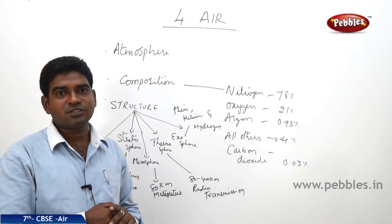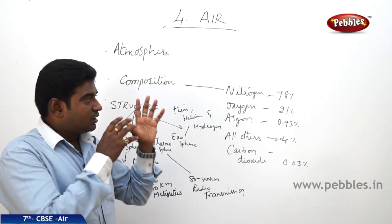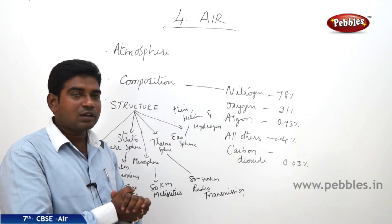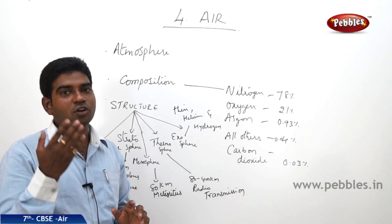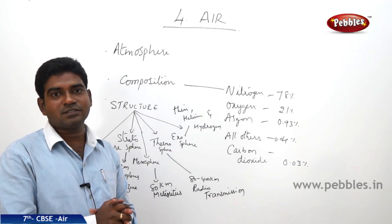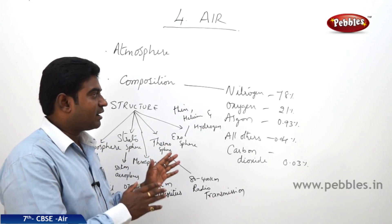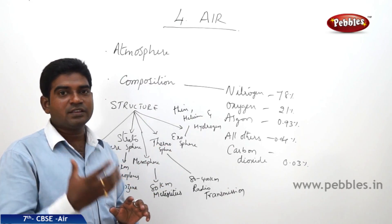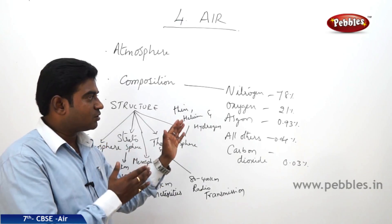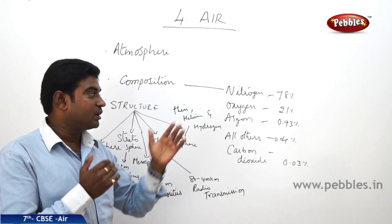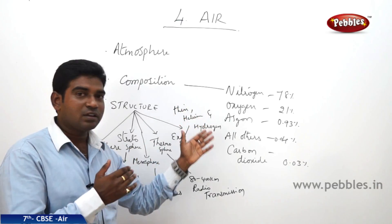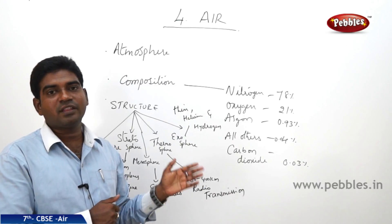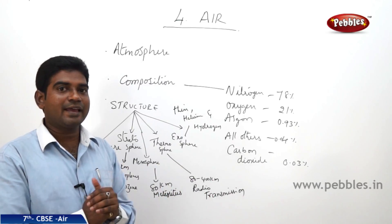The air consists of nitrogen, oxygen, argon, carbon dioxide, helium, krypton, xenon — altogether resulting in 100%. The major share is by nitrogen, then oxygen, followed by carbon dioxide and the other gases.